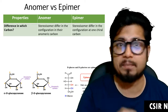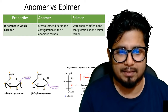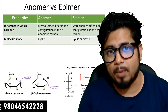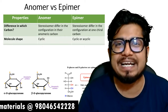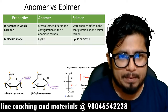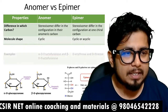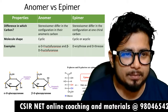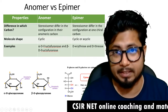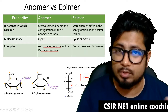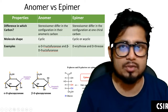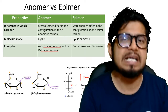So alpha D and beta D forms are examples of anomers, while glucose and galactose are examples of epimers at carbon number four. Regarding molecular shape, anomers are always in cyclic form — for example, alpha D-glucopyranose and beta D-glucopyranose, or alpha D-fructofuranose and beta D-fructofuranose — while epimers can be cyclic or non-cyclic. Examples of epimers include D-glucose and D-galactose (epimers at carbon four), and D-erythrose and the triose.